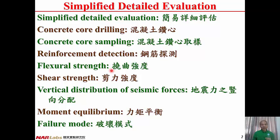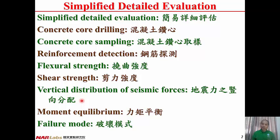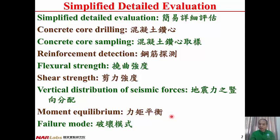For material strength, we can compute the flexural strength of column or beam, and we also can compute the shear strength of the column and beam. The seismic force is vertically distributed to stories so that we can have story seismic force. And we take a column line from a structure, and by using moment equilibrium, we can find the lateral strength of that column line.